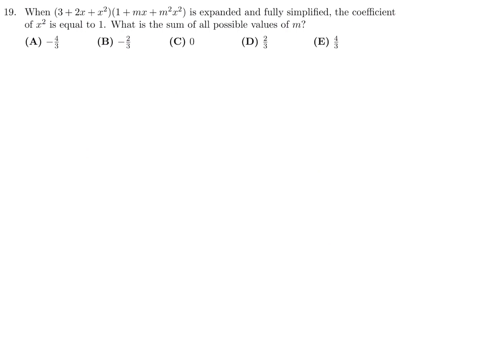When 3 plus 2x plus x squared times 1 plus mx plus m squared x squared is expanded and fully simplified, the coefficient of x squared is equal to 1. What is the sum of all possible values of m? Let's do that expansion. And let's see what we get.